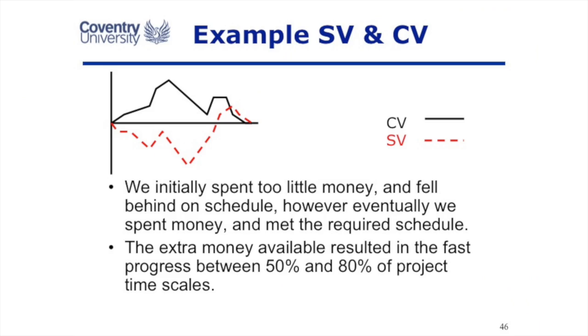And this might be a typical project. It doesn't really matter where the cost and the schedule variance graphs go, as long as they end up at zero, which means on plan. So in this project, initially too little money was being spent and we fell behind schedule. But we noted it, sorted out the problem, allocated the correct resources, and got back to plan.